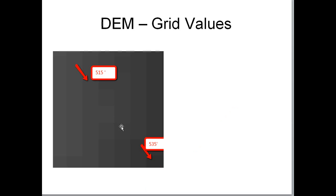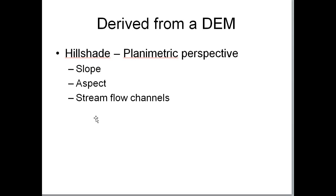If you stare closely at the DEM display, you can see each little grid cell is a slightly different color. Using the identify tool, one grid might show 515 feet and the adjacent one 513 feet. We use DEMs to derive other raster products. You're going to have a DEM of Eugene and Springfield and will create a 3D relative relief effect using the Hillshade tool. You can also derive slope, aspect, and stream flow channel hydrology from a DEM — they're really important tools for analysis.